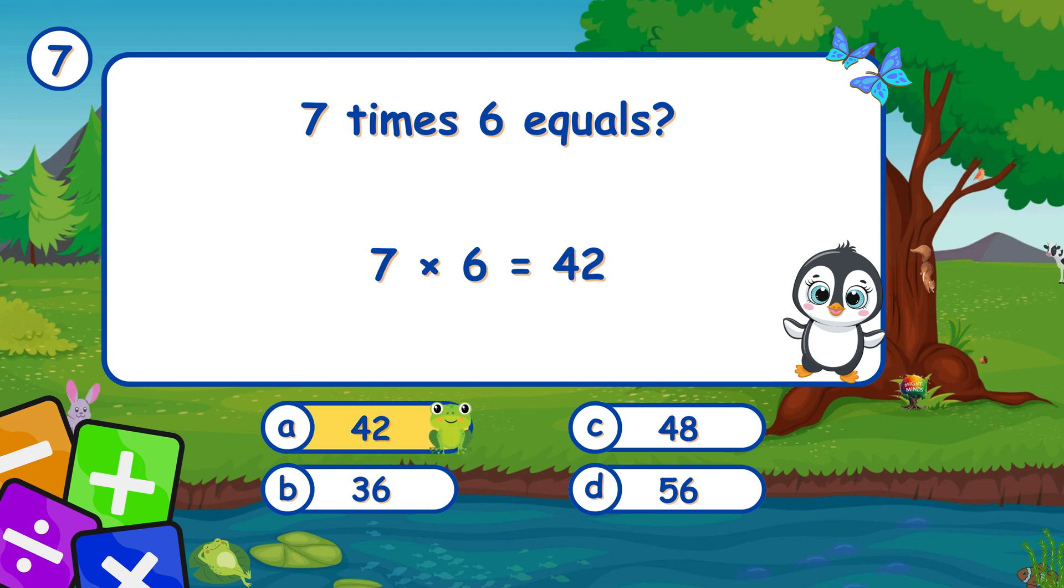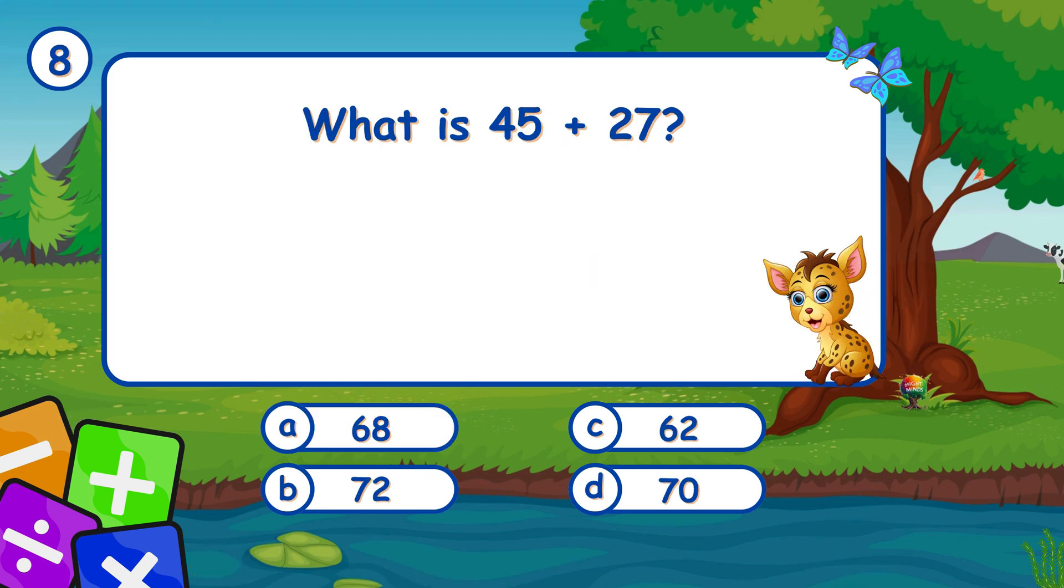It's A, 42. 7 times 6 equals 42. What is 45 plus 27? It's B, 72. Adding 45 and 27 gives 72.